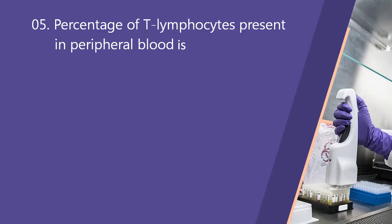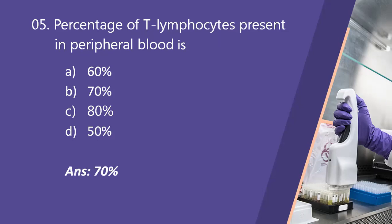Next question: percentage of T lymphocytes present in peripheral blood is? Option A, 60%. Option B, 70%. Option C, 80%. Option D, 50%. The right answer is option B, 70%. Lymphocytes are major components of adaptive immunity. T lymphocytes directly destroy infected host cells, produce cytokines, and regulate immune response. The actual range is 68.1% ± 4.2, so 70% is the correct answer.